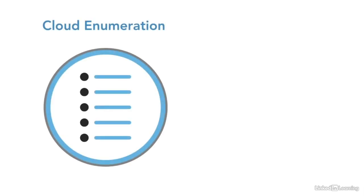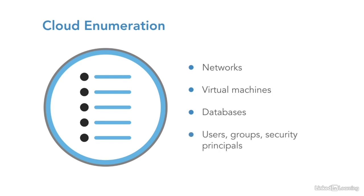The cloud enumeration phase means enumerating or listing things deployed in the cloud, like virtual networks, virtual machines, databases, and also lists of users, groups, and security principals in a centralized network directory. A security principal is kind of like a dummy user account — it allows software entities or components to have access permissions to other resources, such as a web component having access to read from a back-end database.